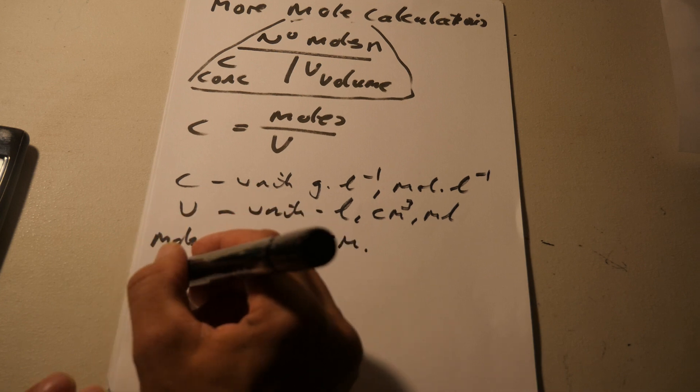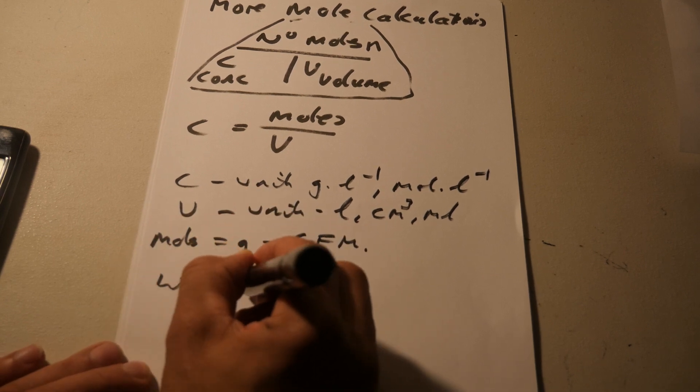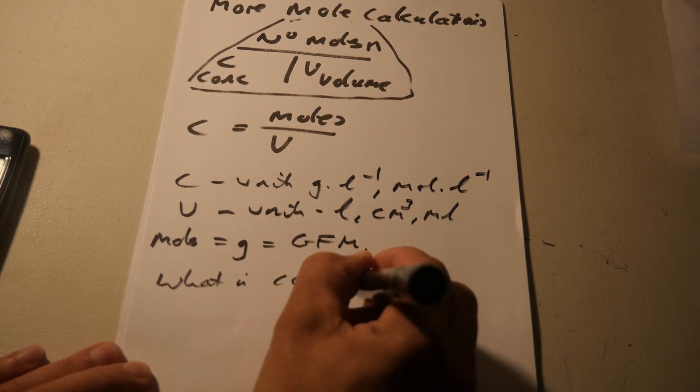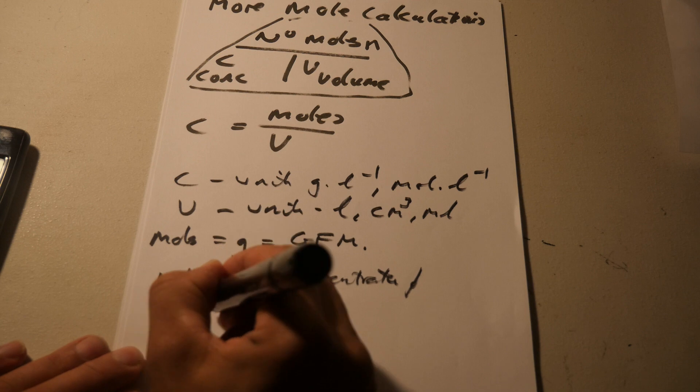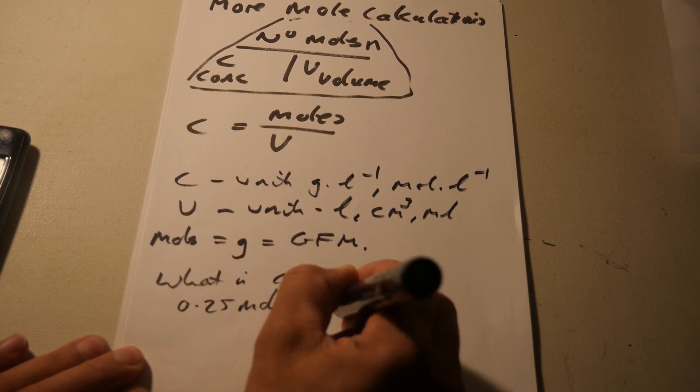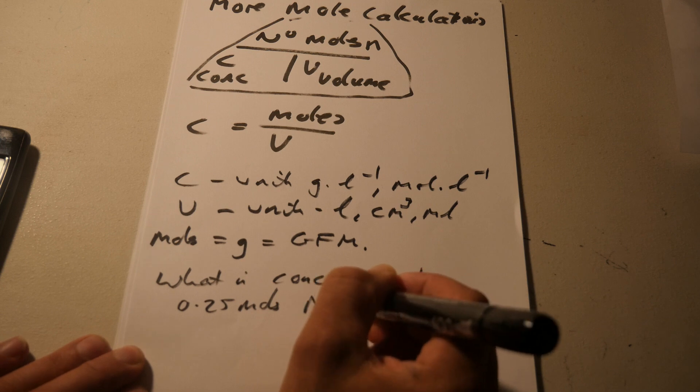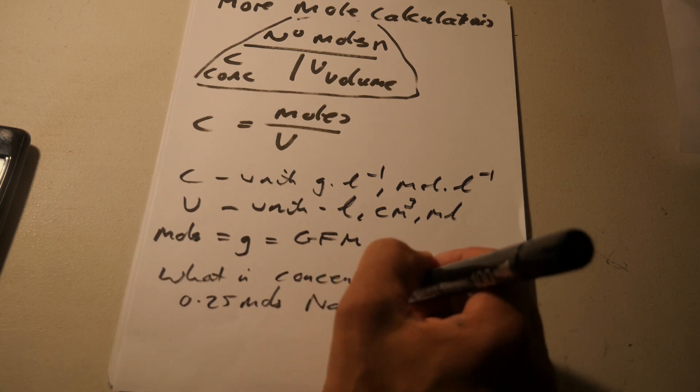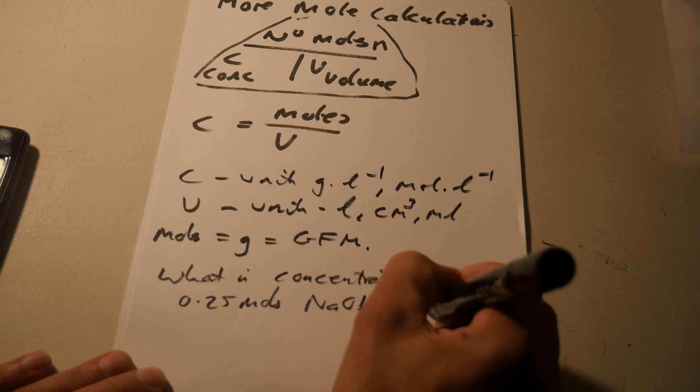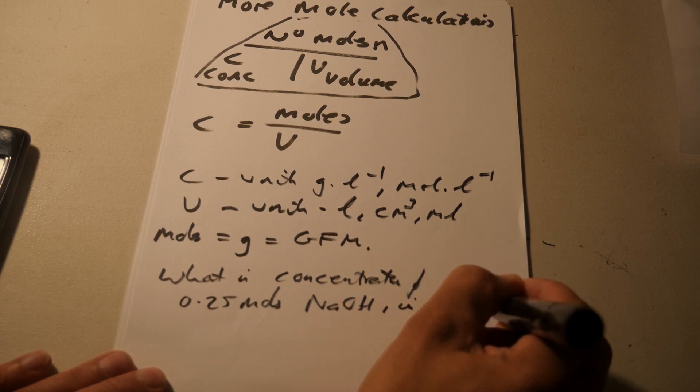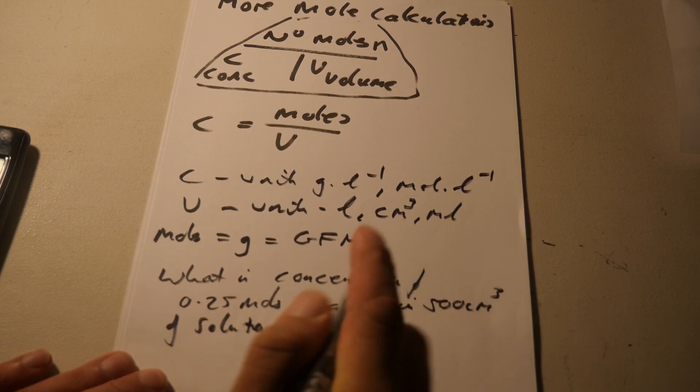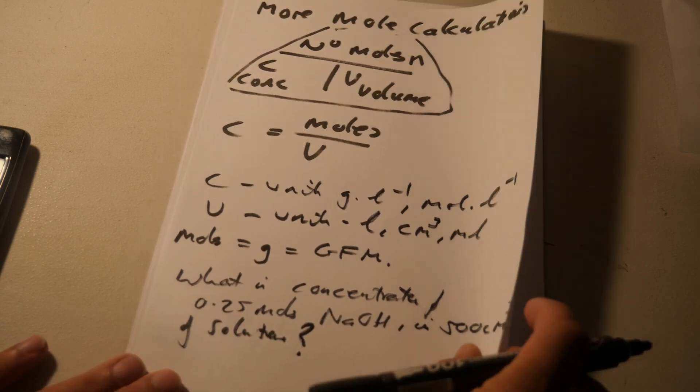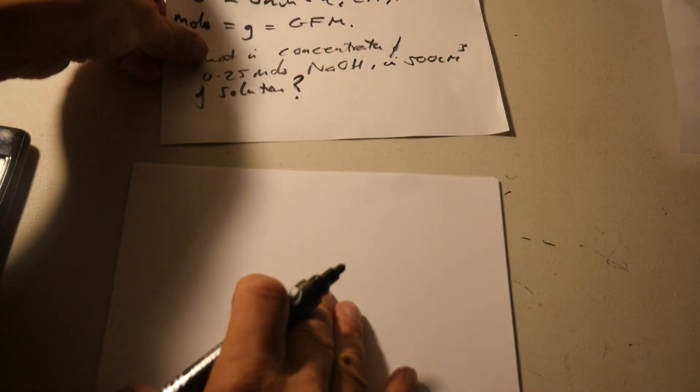So, example, what is the concentration? It's the gram of 0.25 moles of sodium hydroxide which is dissolved in 500 centimeters of solution. So what's the concentration of that?